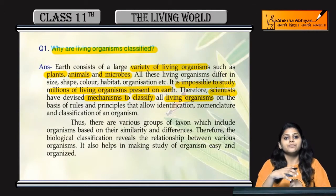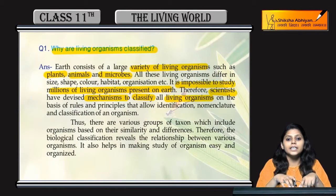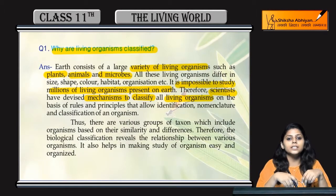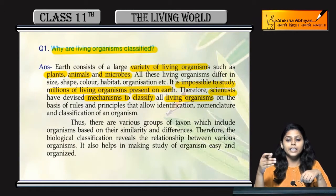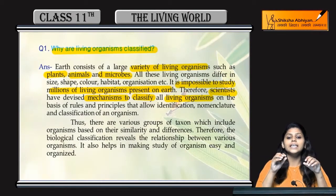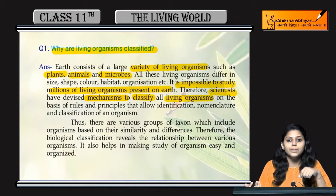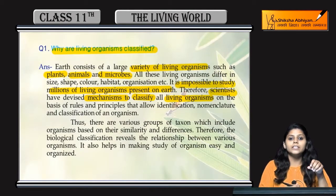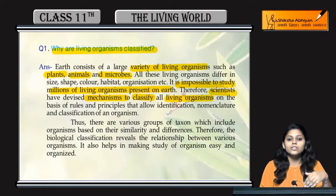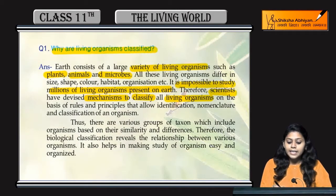So for example, मान लो class first है, उसमें age group 5 या 6 के students हैं। वैसे ही class 2 है, उसमें 7 या 8 age group के students हैं। तो यह जो class है, इन्हें taxon बोलेंगे, और इसके under जो members हैं — जो भी students हैं — उन्हें इनके taxons के organisms कहेंगे। There are various groups of taxons।